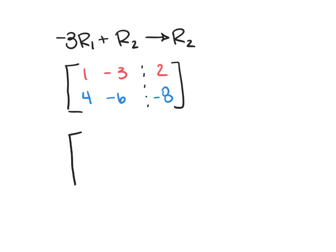So notice that we're getting a new row, row 2. So what I'm going to do here is I won't even touch row 1. I'm just going to rewrite row 1 like it is, which is 1, negative 3, and 2.